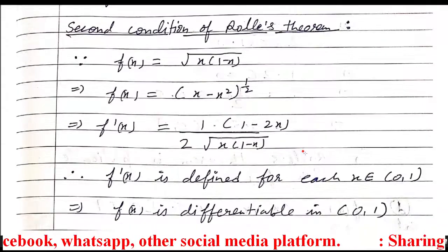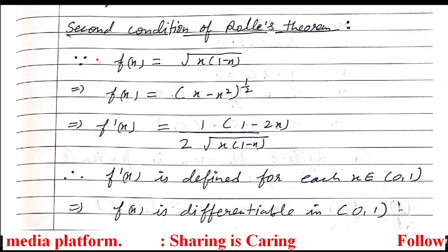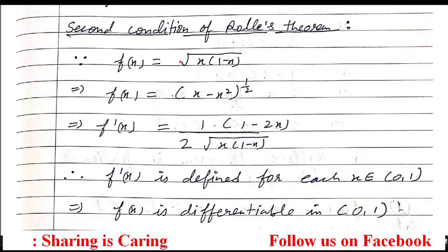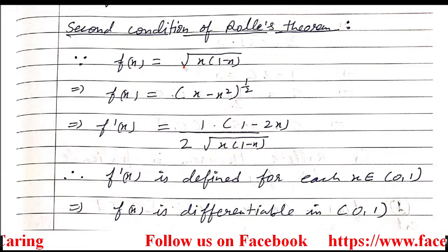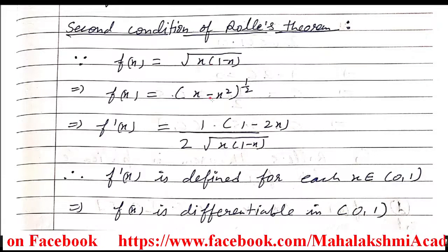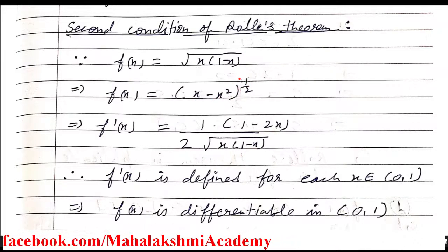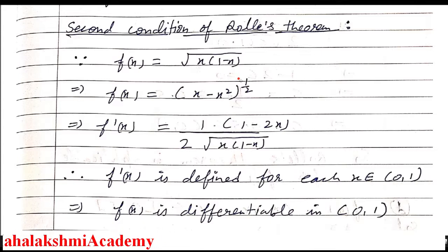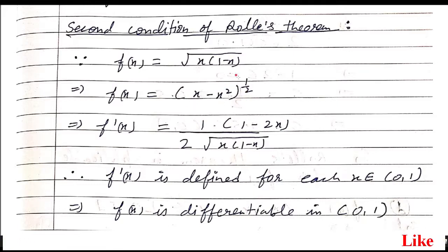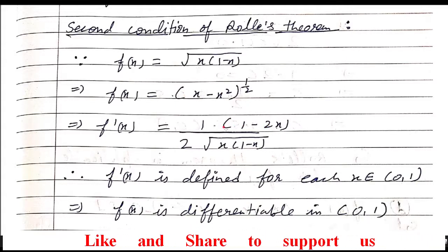The second condition of Rolle's theorem is that the function must be differentiable in the open interval. To prove it, we first write down f(x) and differentiate it. I write the root in the form of a power to use the x to the power n formula, and I expand the bracket. Using the formula d/dx(x^n) = n·x^(n-1) with n = 1/2, we get n minus 1 equals negative 1/2. The bracket differentiates via the chain rule to give (1 minus 2x).